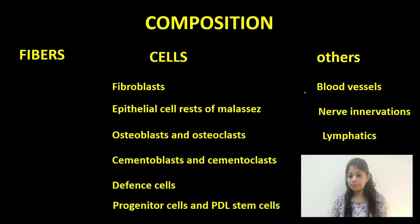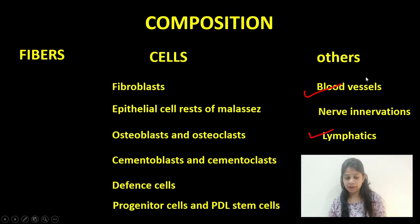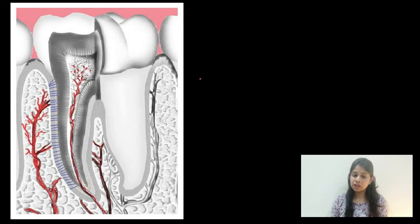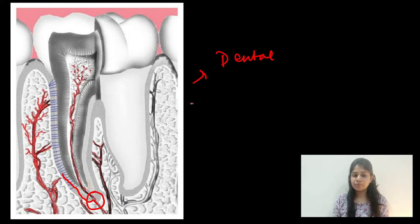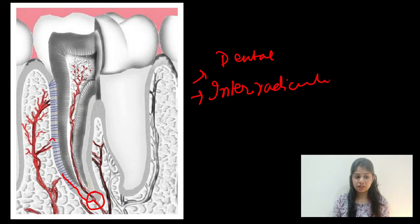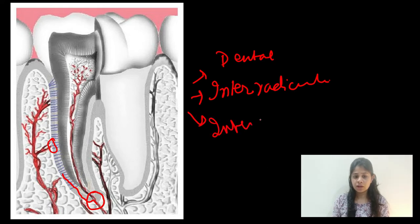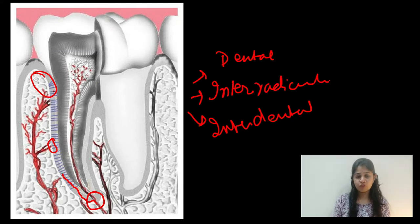Next, we'll talk about blood supply and lymphatic drainage. The periodontal ligament is supplied by branches from three major sources. First, the dental branches enter the apical foramen to supply the pulp but also give branches to the periodontal ligament before entering. Second, the interradicular branches supply the alveolar bone and reach the periodontal ligament through the cribriform plate. Both dental and interradicular branches supply the apical third of the root. The third type, interdental branches, arise near the alveolar crest and supply the coronal aspect of the periodontal ligament.